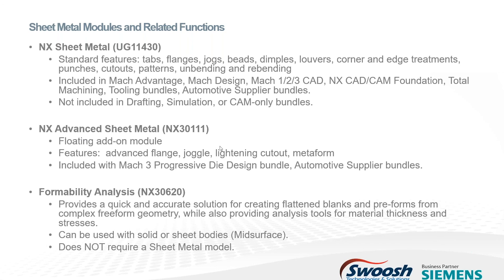The advanced sheet metal package — which includes the advanced flange, joggle, and lightning cutout — is an add-on, product number NX30111. For most people it'll be an add-on, unless you have a Mach 3 progressive die package or certain automotive supplier bundles that include it. The other separate item is formability analysis, NX30620 — the one that does finite element analysis on any part, generating the flat pattern as well as showing stresses, material thinning, and changes in material thickness as a result of the analysis.